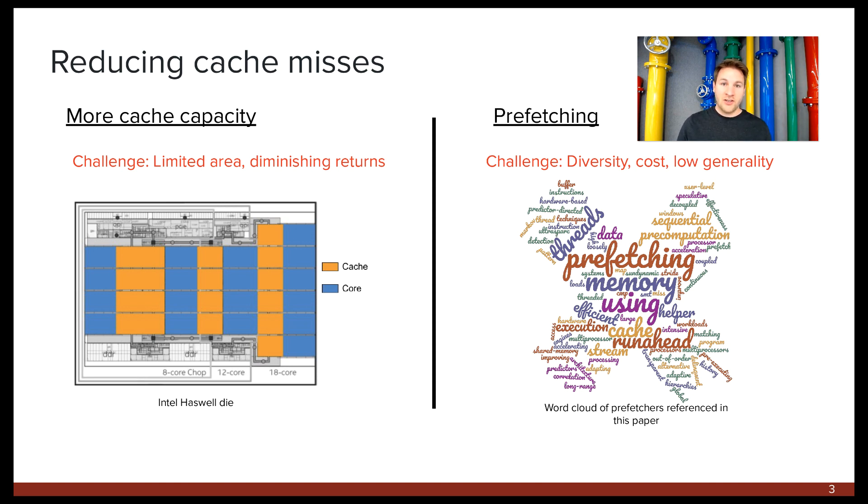On the other hand, prefetching can be cheaper to implement. But the problem is that we don't have a one-size-fits-all prefetcher that is both easy to build and which is very performant for a wide range of memory access patterns. Instead, what we have is a potpourri of prefetcher proposals, which are each effective under very specific conditions, but ultimately aren't found in real-world devices. To help illustrate this, on the right-hand side, we have a word cloud of the titles of the prefetcher proposals that we reference in our paper. And hopefully this gives a rough sense of the quantity and diversity of the work that has gone into this area.